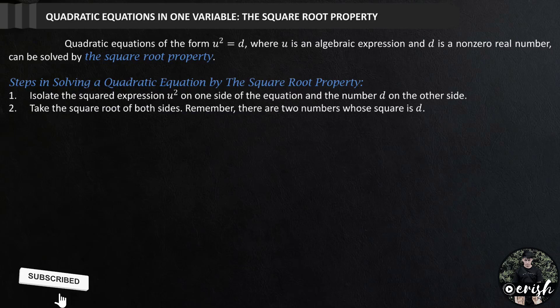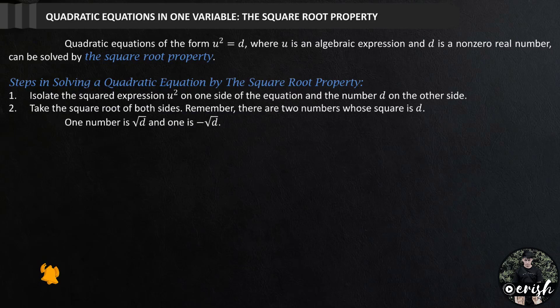Remember, there are two numbers whose square root is d. One number is square root of d and the other number is simply negative square root of d. Using this equation, u squared equals d.